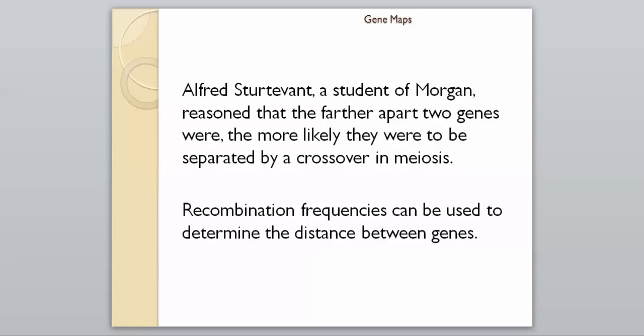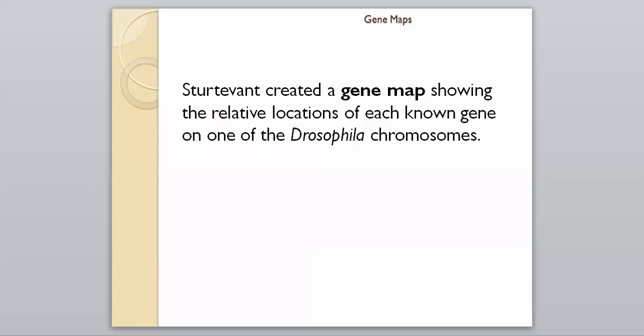Recombination frequencies — how often genes come back together — can be used to determine the distance between genes. We need to know that certain genes are certain distances away from each other on the chromosome, so we can look at a chromosome and tell where the location of genes actually are. Sturtevant created a gene map showing the relative locations of each known gene on one of the Drosophila — fruit fly — chromosomes.